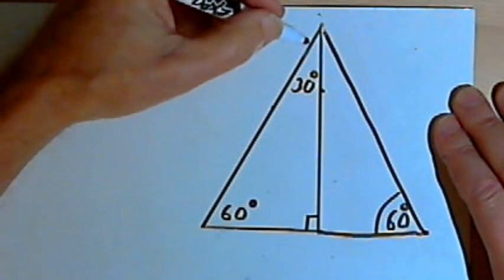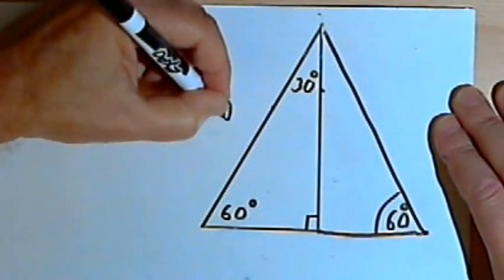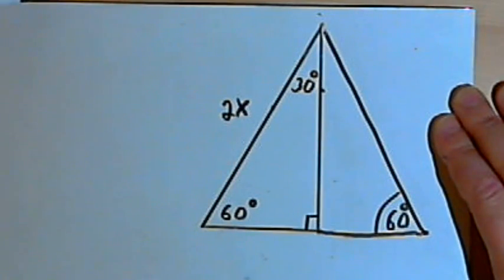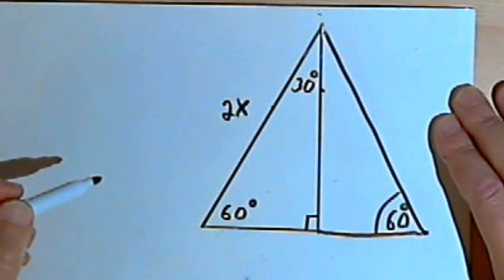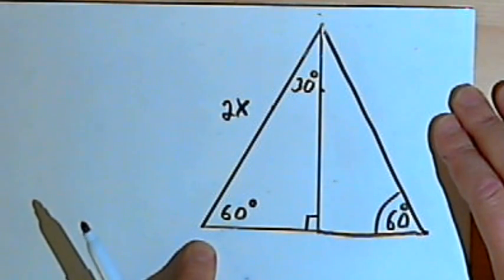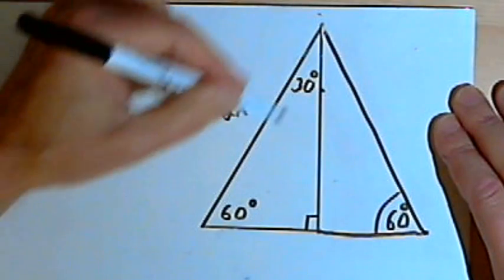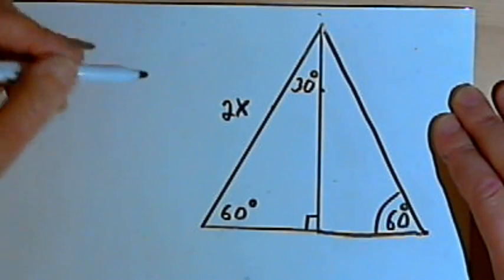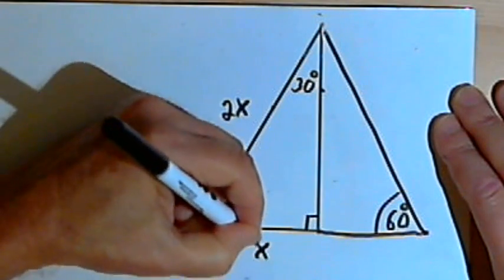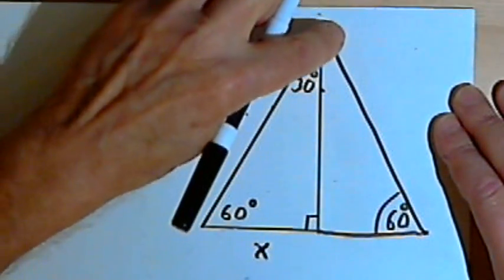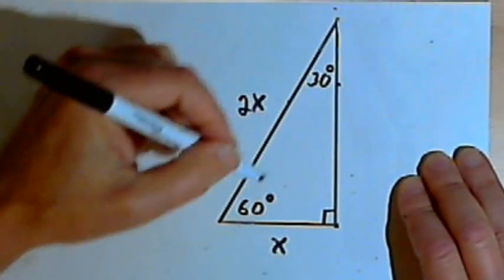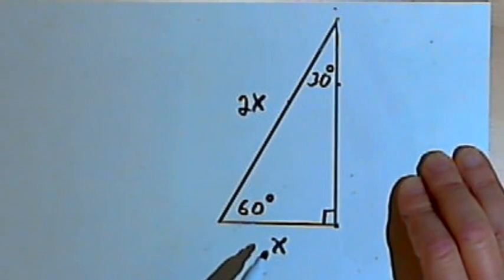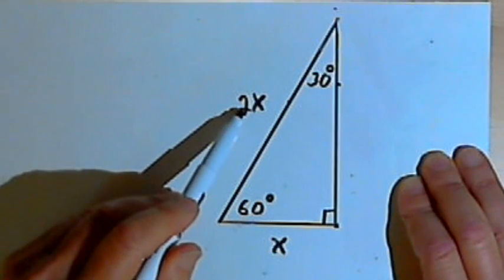If the equilateral triangle has sides of length 2x, then all sides have length 2x, so the base is 2x. One-half of the base — the part belonging to the 30-60-90 triangle — has length x. So in the 30-60-90 triangle, if the short leg has length x, then the hypotenuse has length 2x.